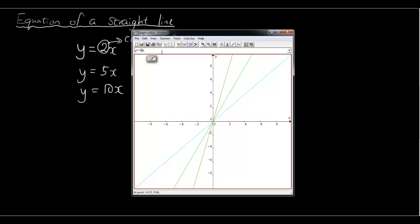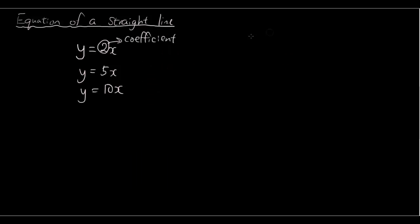Now let's try a number smaller than 1. So originally we had y equals x, which gave us the blue line. Let's try y equals 0.5x. And now we get the dark blue line, which is less steep than the light blue line. So the number in front of x — we also call this number the slope of the graph — because this number affects the slope of the graph.